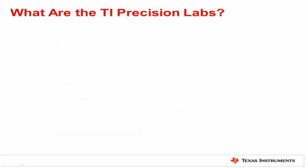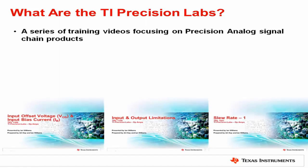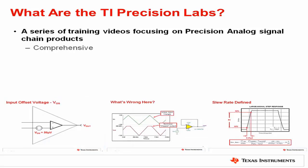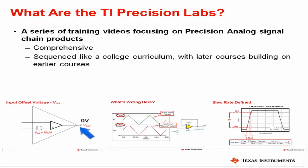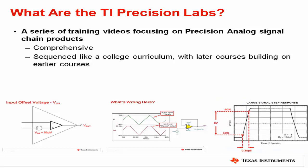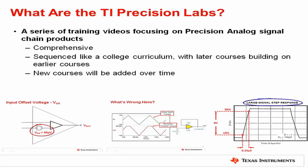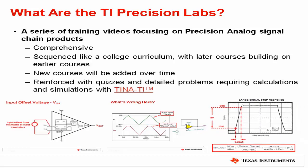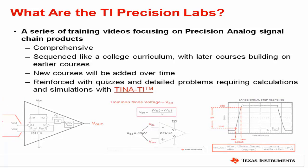The TI Precision Labs are a series of training videos focusing on analog signal chain products. The labs are comprehensive, like an analog board and system level design book. They are sequenced like a college curriculum, where later courses build on concepts introduced in earlier courses. A selection of courses will be available at launch, and new courses will be added over time. In order to fully reinforce what you learn, we've prepared quizzes and detailed problems to be completed at the end of every course.